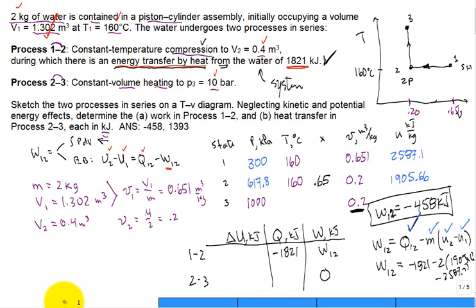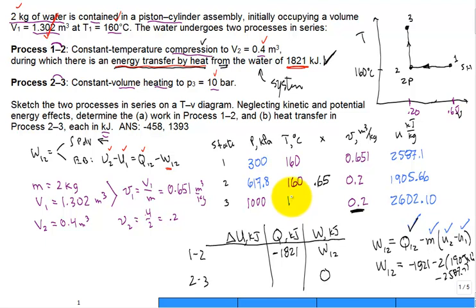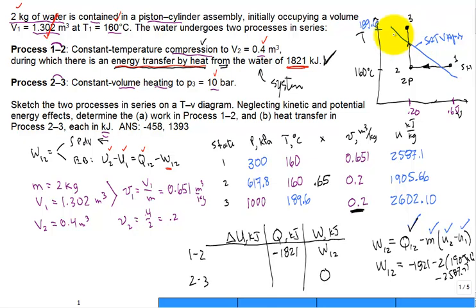We enter u3 equals 2602.10 kJ/kg into the table at state 3. Noting the T-V diagram, both state 1 and state 3 are in the superheated region, while state 2 is in the two-phase region — so the process from 2 to 3 crosses back through the saturated vapor boundary into the superheated region.